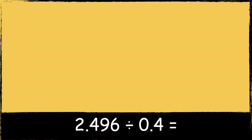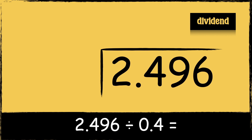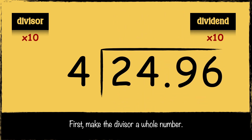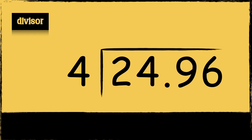Here's another example: 2.496 divided by 0.4. First we need to draw the bus stop. We put the number that we're dividing — the dividend — inside the bus stop, and we put the number that we're dividing it by — the divisor — next to the bus stop. I'm going to make the divisor into a whole number by multiplying by 10: 0.4 times 10 is 4. I also need to multiply the dividend by 10: 2.496 times 10 is 24.96. Now that my divisor is a whole number the calculation will be easier.